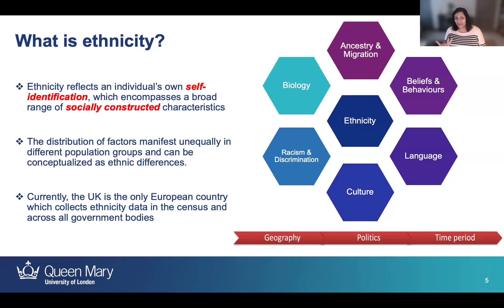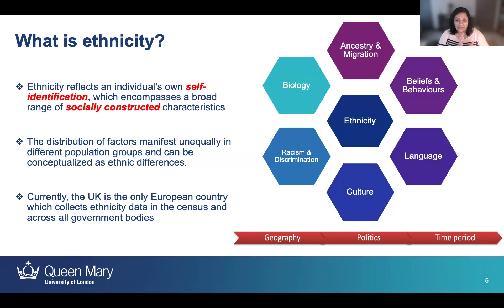We now understand ethnicity much more holistically to reflect an individual's own self-identification, which encompasses a broad range of socially constructed characteristics — including but not limited to biology, our experiences of ancestry and migration, our beliefs and behaviors, our language and culture, and our experiences of racism and discrimination.